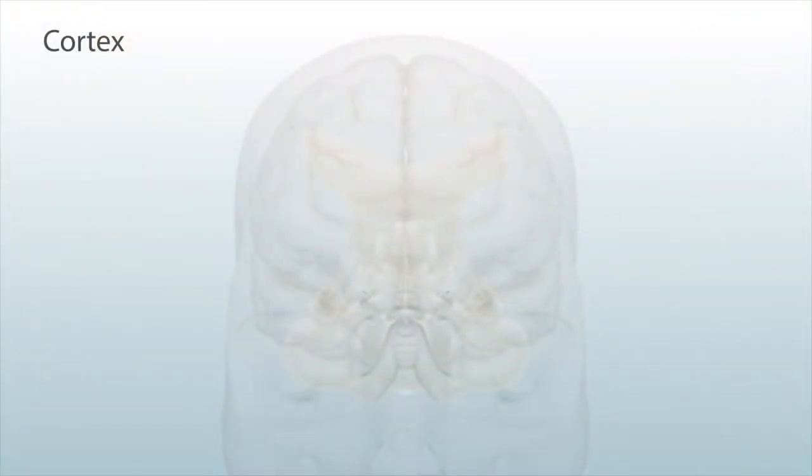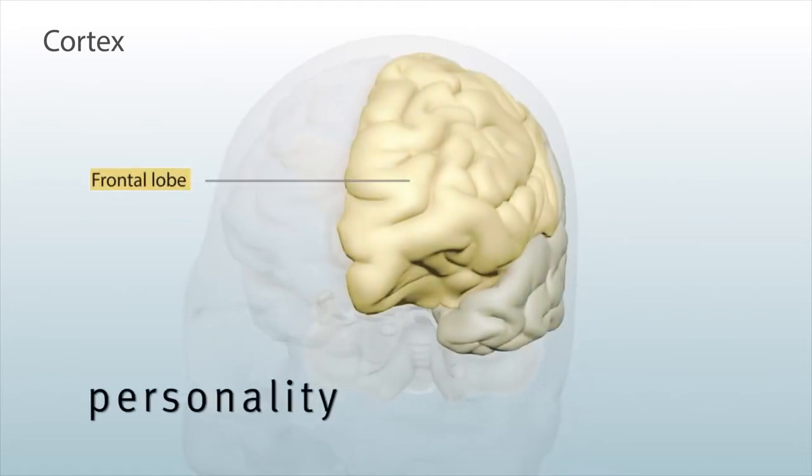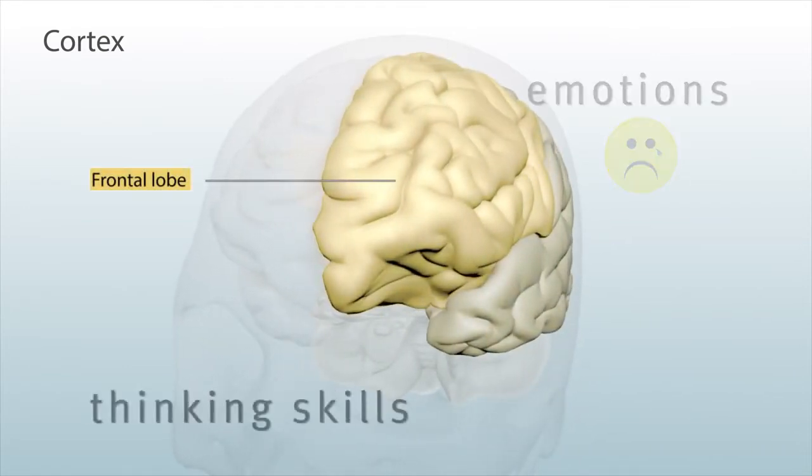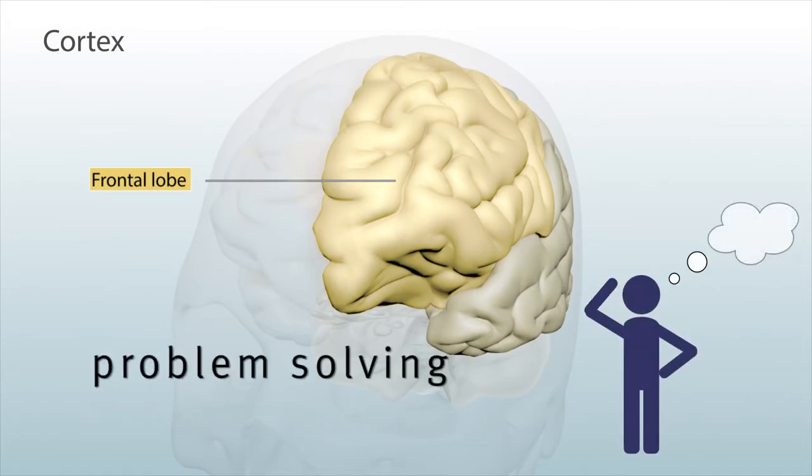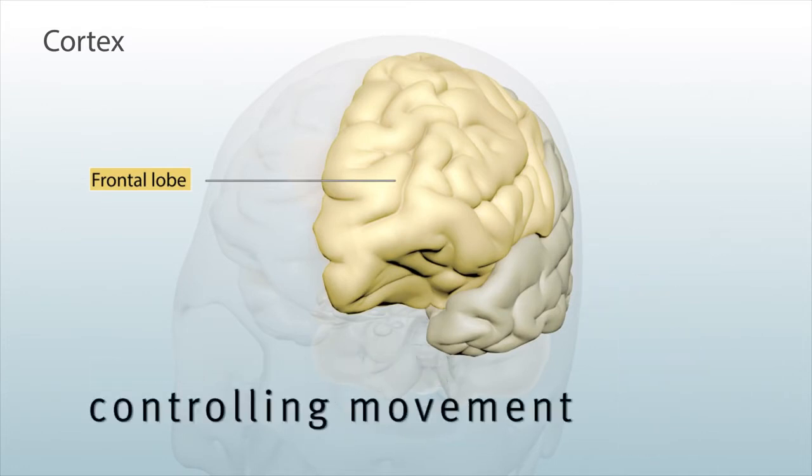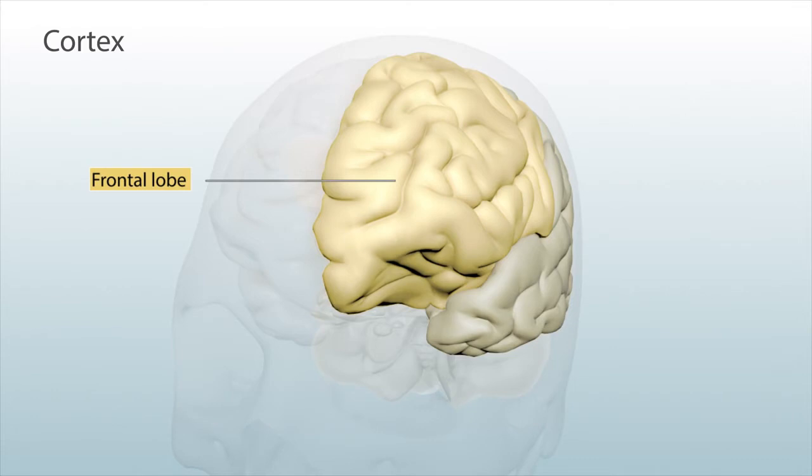The cortex is divided into four regions. The frontal lobe is for personality and emotions, higher thinking skills like problem-solving and controlling movement. It continues to develop until you are in your mid-20s.